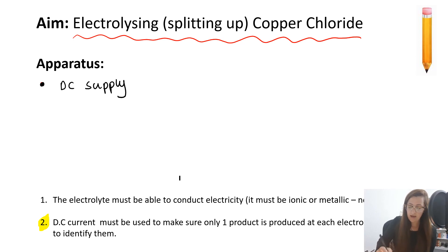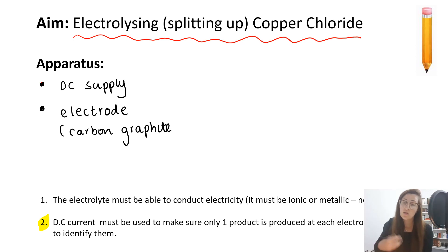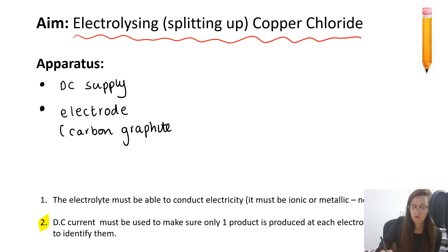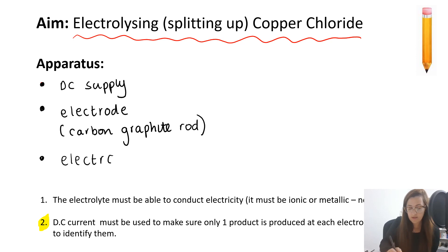We will also have two electrodes and we are using carbon graphite as our electrodes. Your electrode must be able to conduct electricity — we can use metals, but for this instance we're using carbon graphite rods. Carbon graphite is the only covalent network that's able to conduct electricity. We're also going to use an electrolyte to complete the circuit, and our electrolyte is going to be our copper chloride solution.